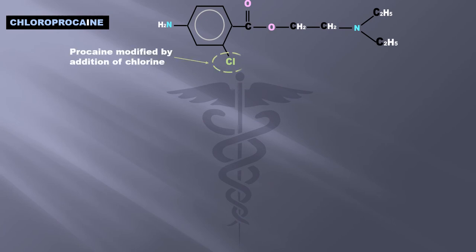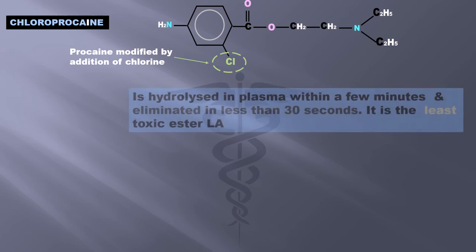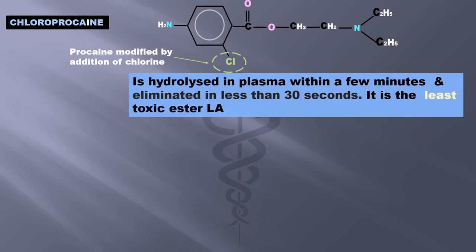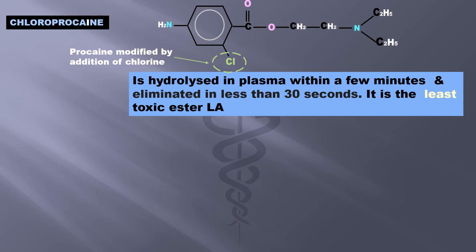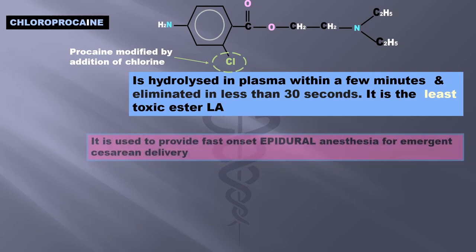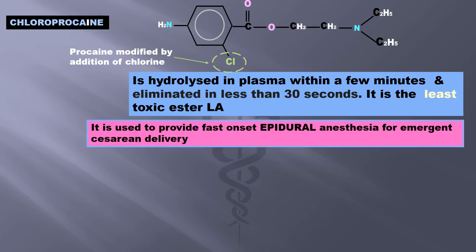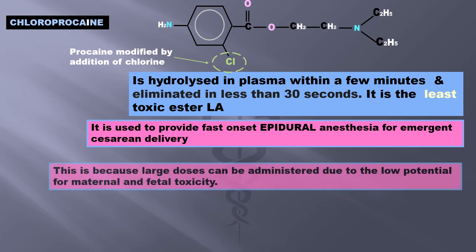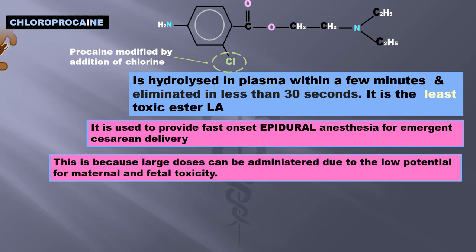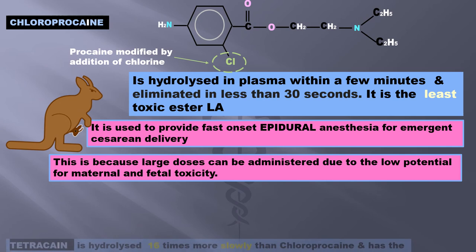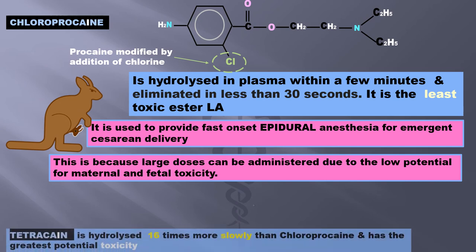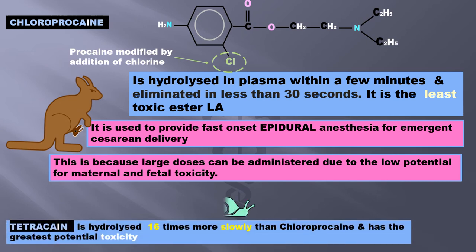Chloroprocaine is procaine modified by addition of chlorine. It is hydrolyzed in plasma within a few minutes and eliminated in less than 30 seconds — it is the least toxic ester LA. It is used to provide fast-onset epidural anesthesia for emergent cesarean delivery, because large doses can be administered due to low potential for maternal and fetal toxicity. Tetracaine is hydrolyzed 16 times more slowly than chloroprocaine and so has the greatest potential toxicity.